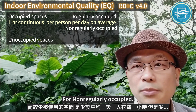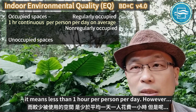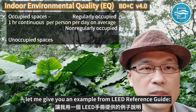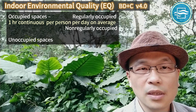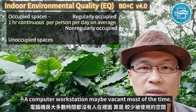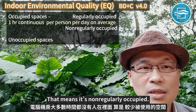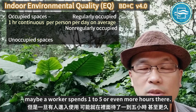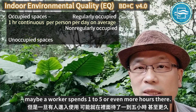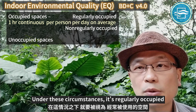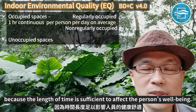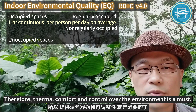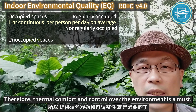Non-regularly occupied means less than one hour per person per day. For example, a computer workstation may be vacant most of the time — that means it's non-regularly occupied. But when it is occupied, a worker may spend one to five or even more hours there. Under these circumstances, it's regularly occupied, because the length of time is sufficient to affect the person's well-being. Therefore, thermal comfort and control over the environment is a must.